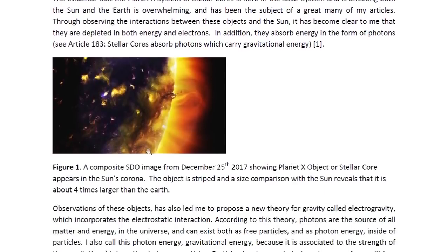And here is a composite STO image from December 25th, 2017, showing a Planet X object or a stellar core in the Sun's corona. And this object is obviously a solid spherical object. It is striped. The stripes are curved which we would expect for stripes on a spherical object. The stripes would naturally follow the contours, the spherical contours of the object. So this is a striped object in the Sun's corona. It is about four times larger than the Earth.